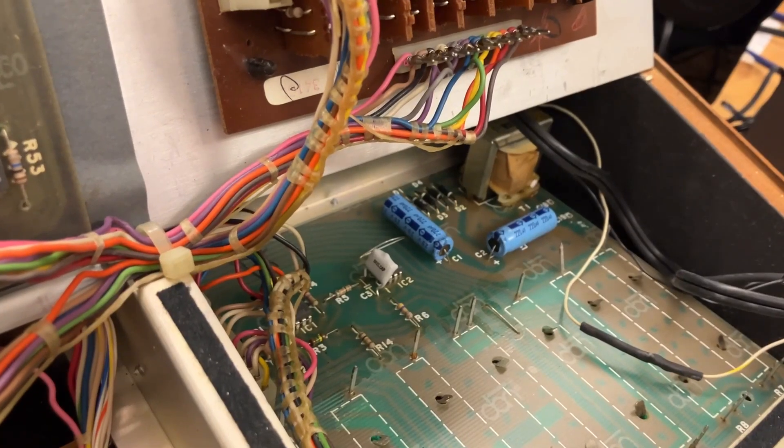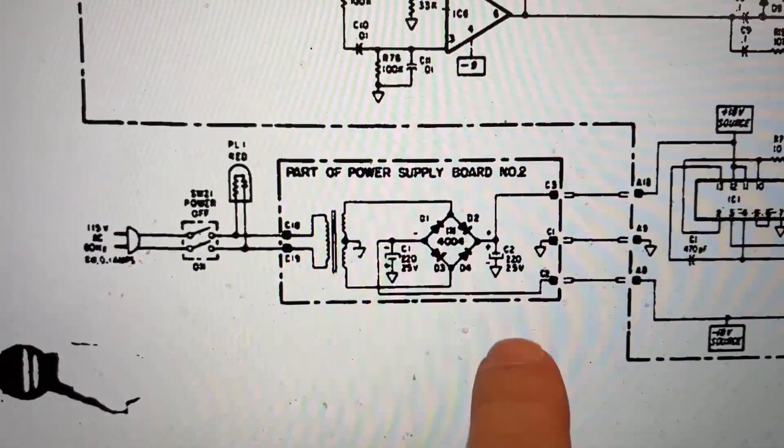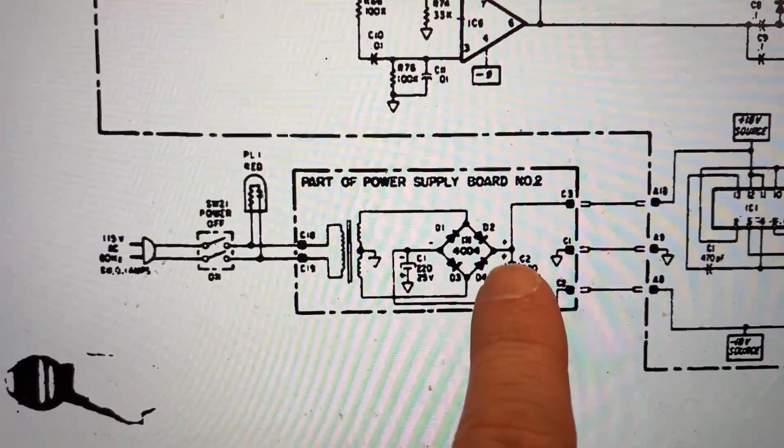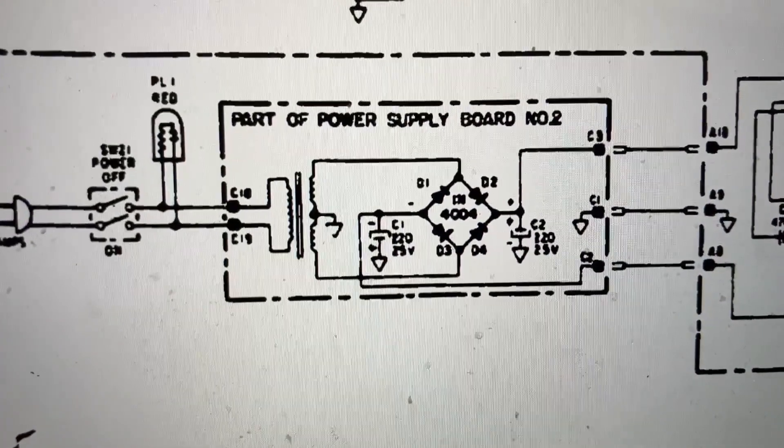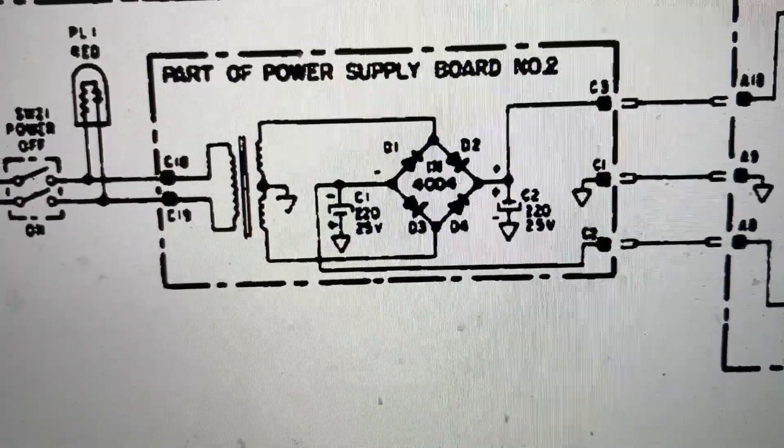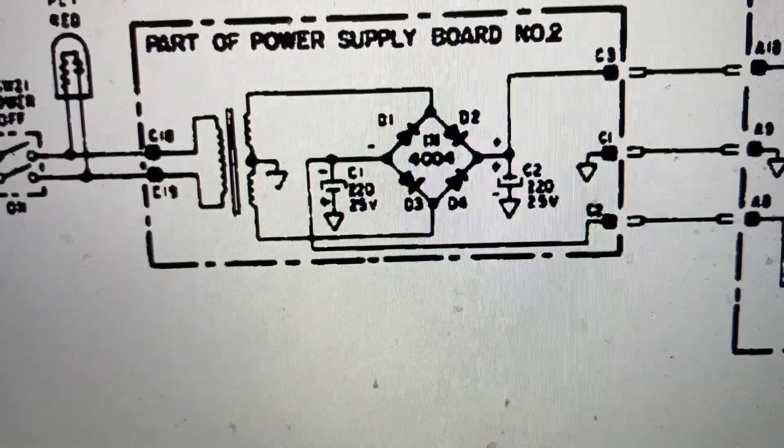Okay, let's see what's going on with the filter caps. Okay, I first want to test the positive supply again. So measure the white stripe part of D2. That reads 15.65. Okay, now measure the white stripe part of D4. 15.67.